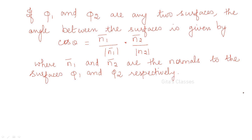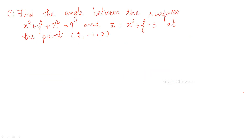If you understand the concepts, you will be able to do the problems, and the questions will be direct questions. So let us do the problem. Find the angle between the surfaces x² + y² + z² = 9 and the second surface x² + y² − z = 3, at the point (2, −1, 2).